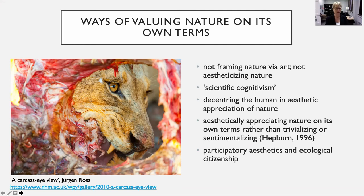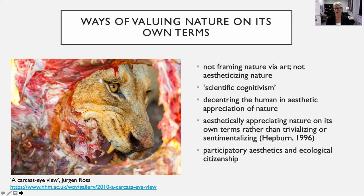Aesthetic judgments of nature are non-instrumentally made — valuing things for their own sake. That takes the human out. That de-centers the human and means that it's a more non-anthropocentric perspective. But aesthetic judgments are anthropogenic: they are generated by humans, they do come from a human perspective. Whether other animals can make aesthetic judgments is another question altogether, but there are some writers who have looked at that. On the non-cognitive side, people like Ronald Hepburn have talked about how important it is not to trivialize or sentimentalize nature, to ensure that our aesthetic appreciation is serious, not trivial.